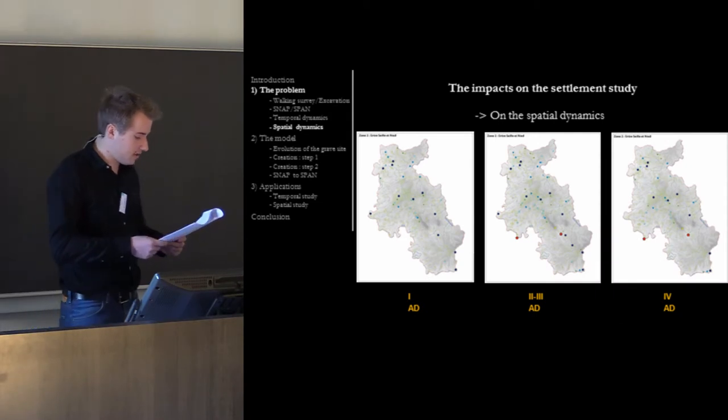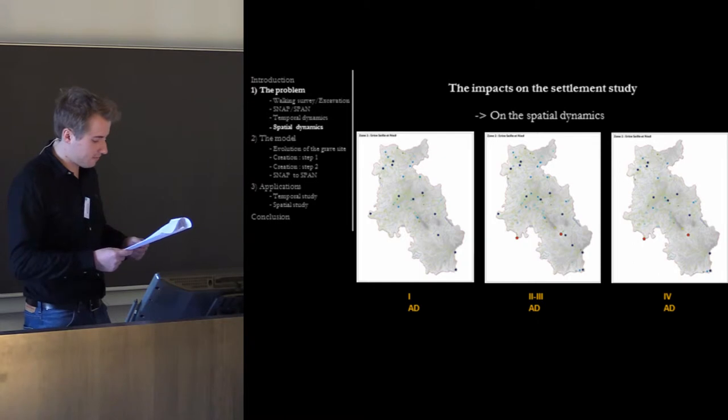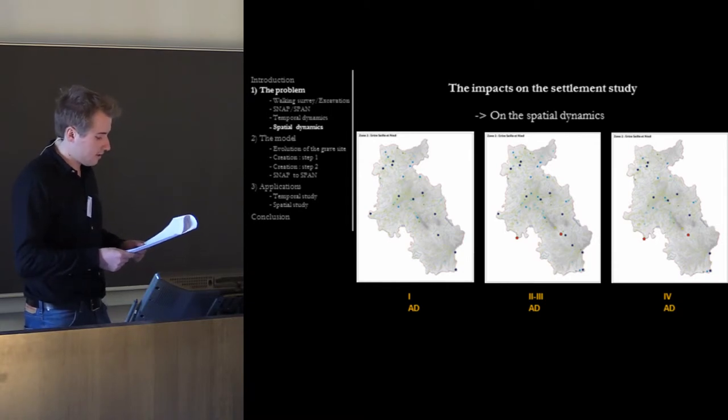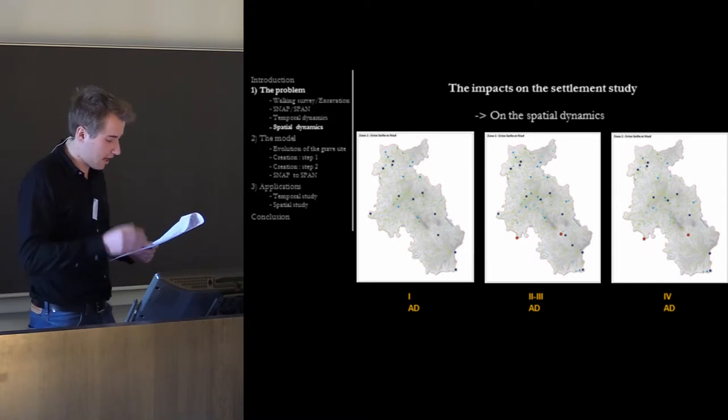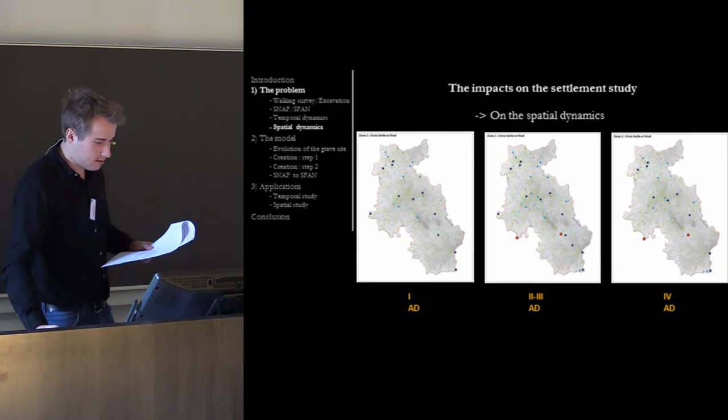The second problem is at the level of spatial dynamics. During the spatial study, if the analysis is made on a fine temporal scale, a single century for example, the data problem can provoke errors in the modeling of the network of settlement. For example, a settlement endowed with a high status will correspond at the 1st century AD, especially as a pole with regard to its neighbors.